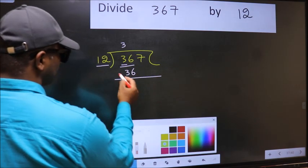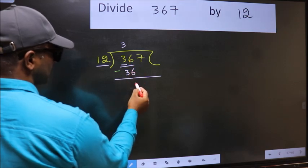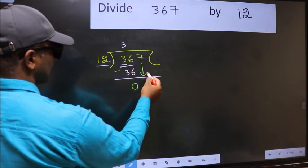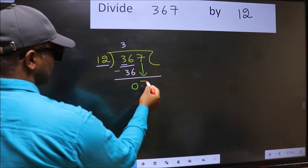Now you should subtract. 36 minus 36 is 0. After this, bring down the beside number. So 7 down.